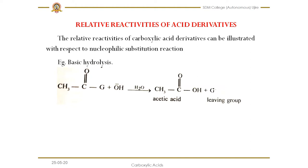The general formula here shows G as a general leaving group: for anhydrides, G is an acyloxy group; for esters, G is an OR group; for acid halides, G is a halogen; and for amides, G is an amine. When you treat those acid derivatives with a base such as sodium hydroxide or potassium hydroxide, the OH group replaces this functional group, and we get the corresponding acid and the leaving group.